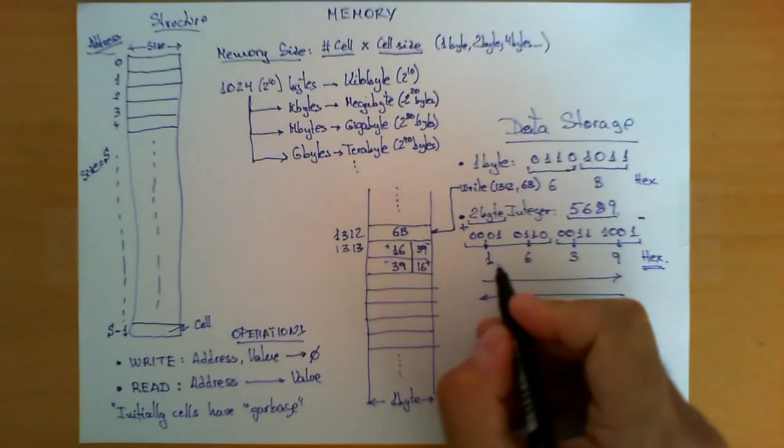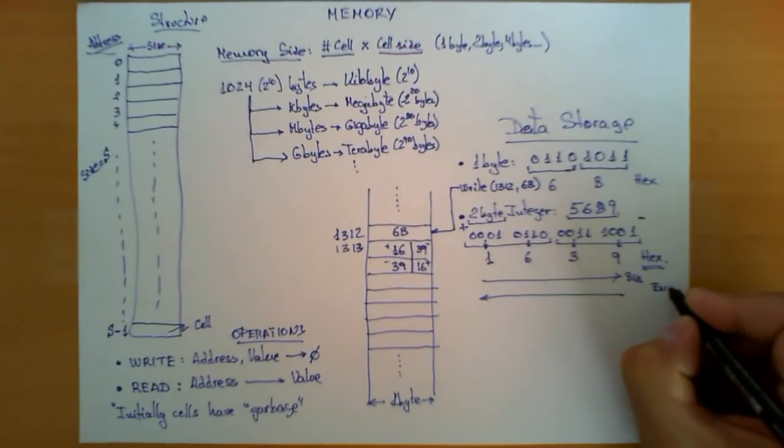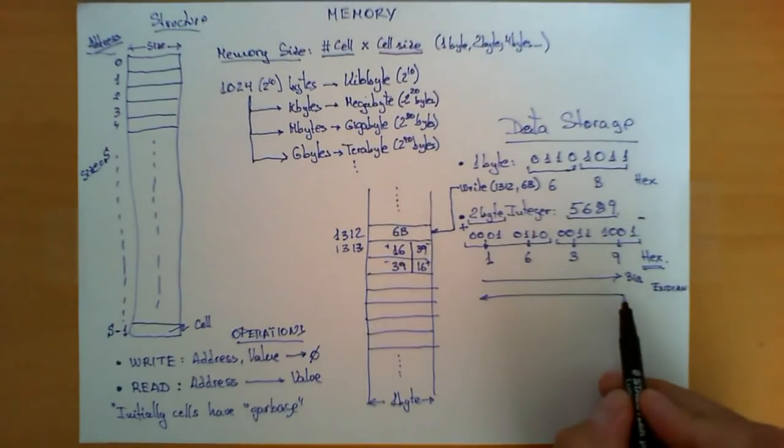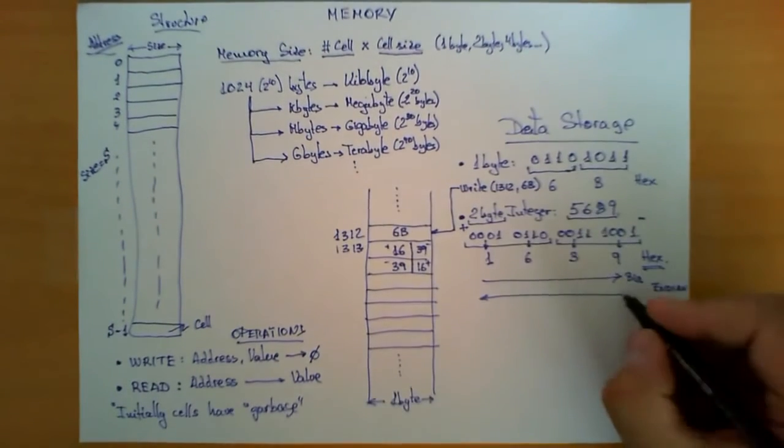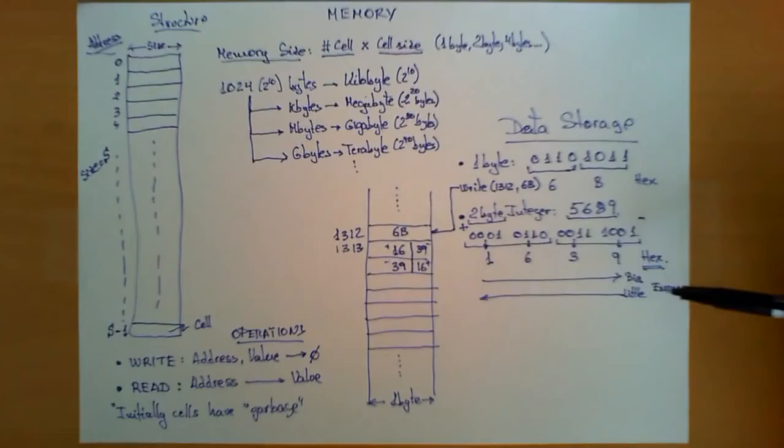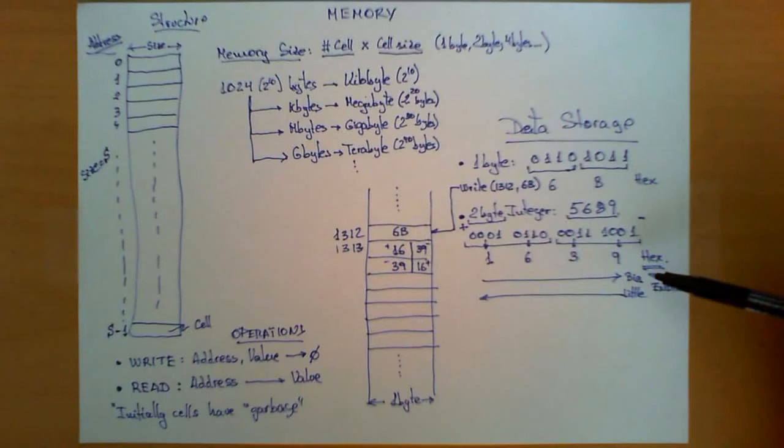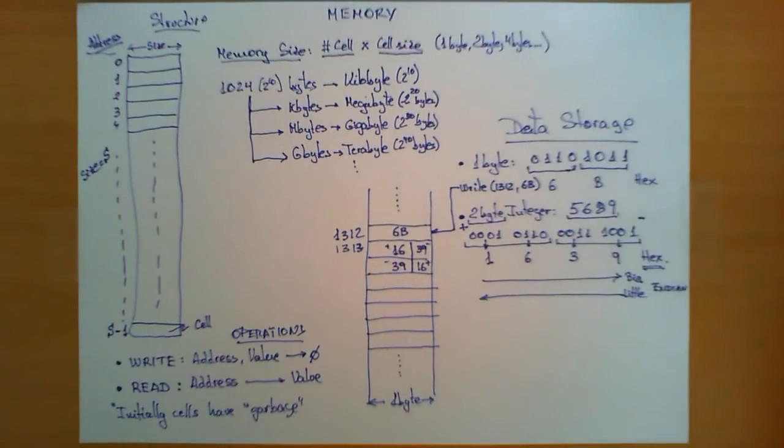When we store first the most significant bit, we call this notation Big Endian, or this policy. When we store starting from the least significant bit, like 39 first and 16 later, we call this Little Endian. The trick to remember this is that Big or Little Endian is always referring to the first byte that is being stored. If it is the most significant one, then it's Big Endian. If it is the least significant byte, then it's Little Endian.